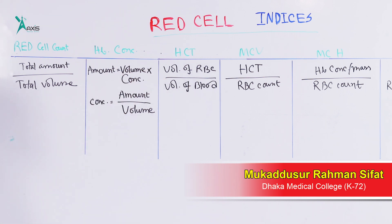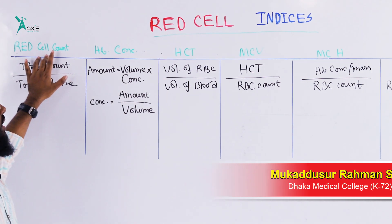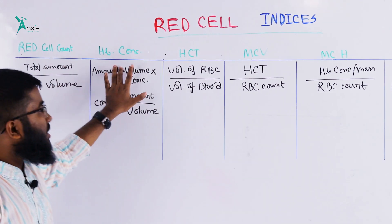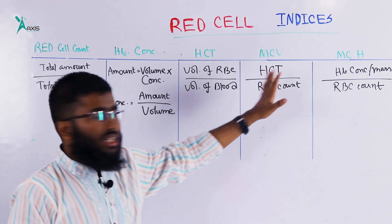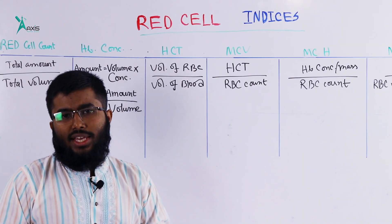The first red cell index I have been reading about is the Red Cell Count. The components include hemoglobin concentration, hematocrit, MCV, and MCH.